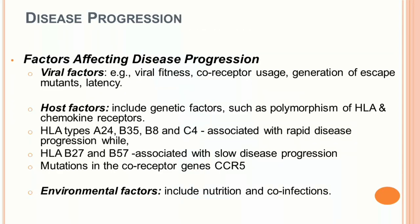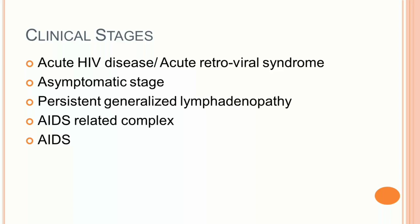Disease progression and severity are affected by viral factors (viral fitness, coreceptor usage, escape mutants), host factors, and environmental factors such as nutritional status and co-infections. According to clinical staging, HIV infection is subdivided into five stages: acute HIV disease (acute retroviral syndrome), asymptomatic stage, persistent generalized lymphadenopathy, AIDS-related complex, and AIDS.